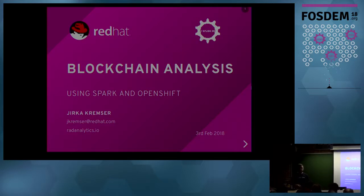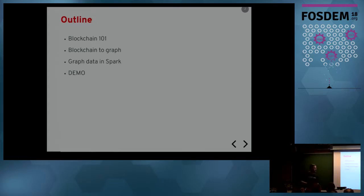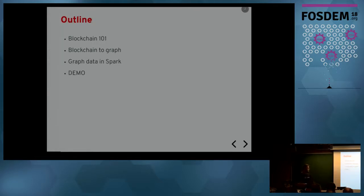This is the outline: first I will briefly describe blockchain — it's just 30 minutes so it will be really brief — then how to represent blockchain transactions as a graph, then how to tackle this graph from a Spark perspective. It will be slightly relevant to the talk from the Neo4j guys about OpenCypher, and a substantial part will be the demo — it will be half of the presentation.